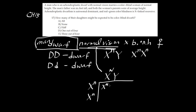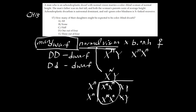Doing the Punnett square for X-linked vision: daughters get one big N and one little n — heterozygous — so all daughters have normal vision. The answer to number 17 is B: none of the daughters will be colorblind dwarfs; they're all normal.